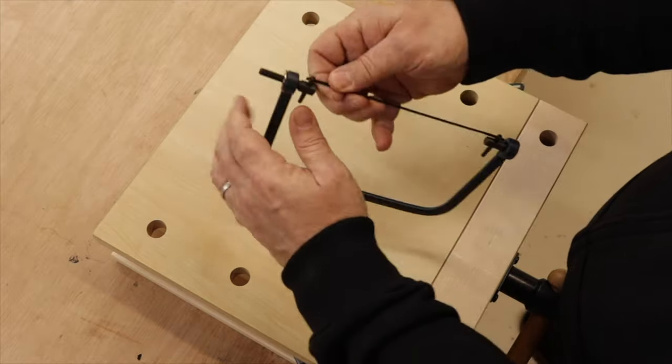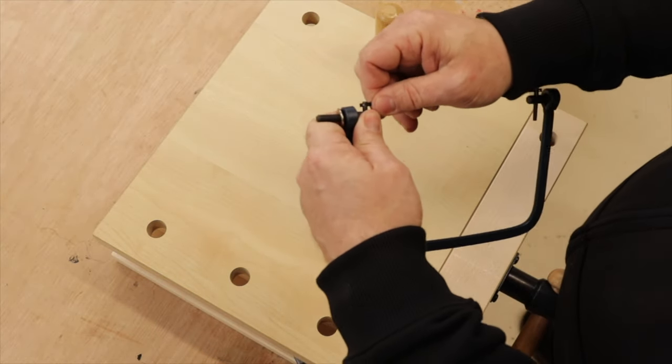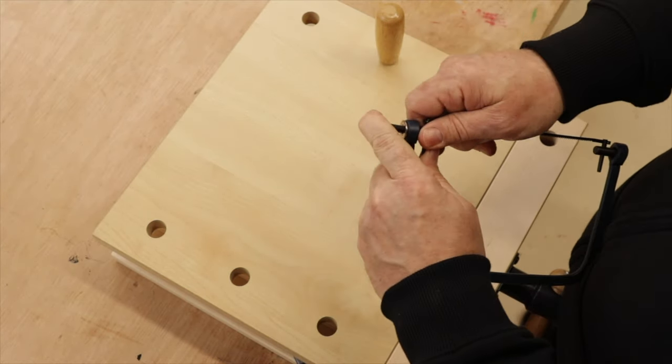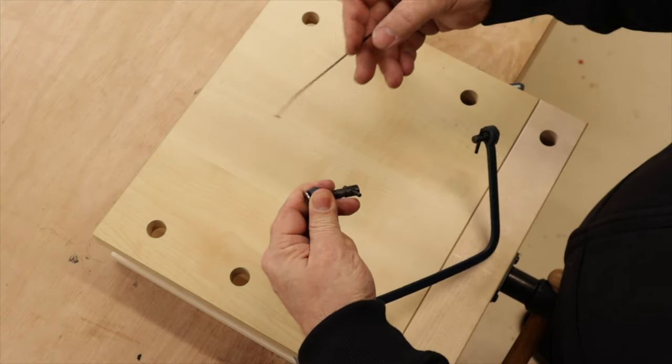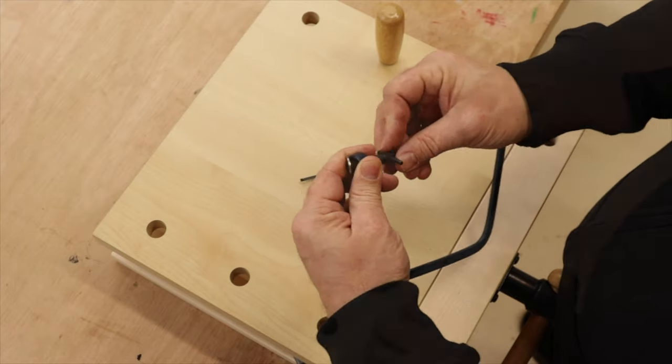Now what we need to do is pull this blade out of these little slots. We're just going to release the pressure on the screw here like that, there we go. And the blade is going to need to turn around the other way.